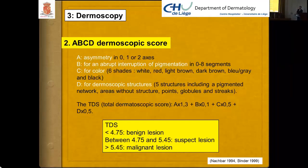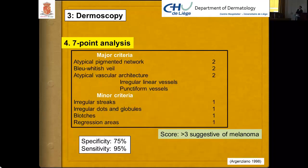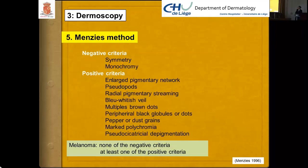The three-point analysis was developed to simplify testing for non-experts, based on asymmetry, atypical network, and presence of blue-white structures. The seven-point analysis, slightly more difficult, is based on major and minor criteria, achieving 75% specificity and 95% sensitivity; a score over 3 is suggestive of melanoma. Menzies' method uses negative and positive criteria — when none of the negative criteria and at least one positive criterion is present, referral is recommended.